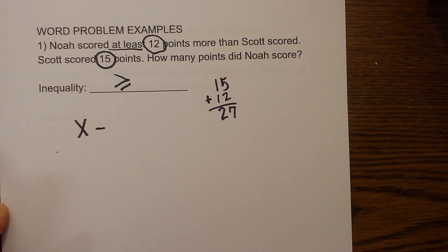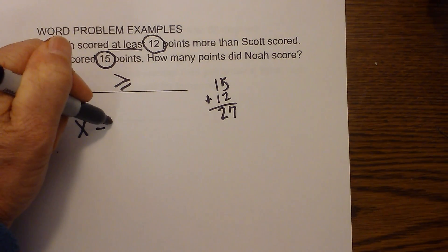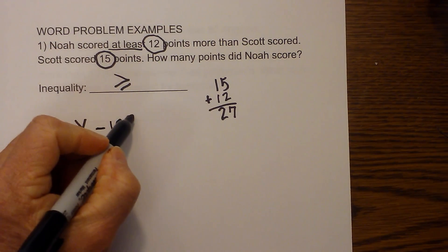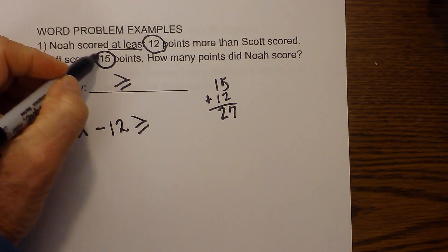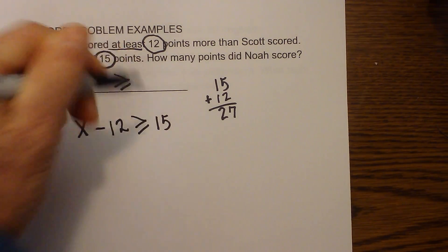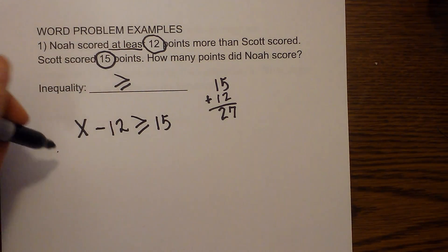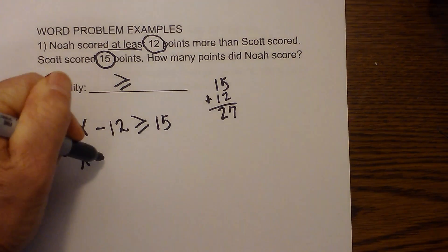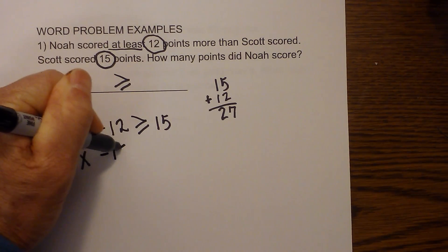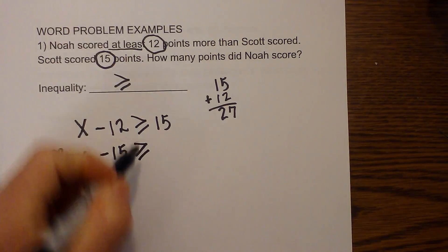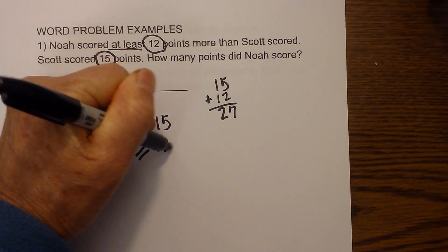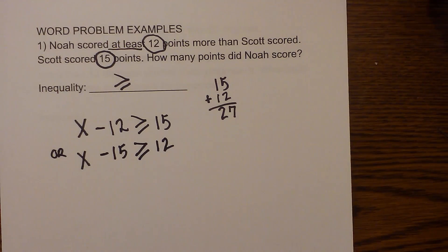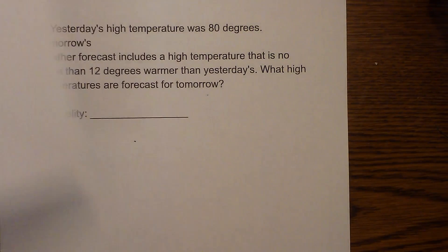Then we write the numbers — I'll write 12 first, plus the inequality sign we came up with, and then the other number. So one solution would be x minus 12 greater than or equal to 15, or we could write it the other way. Either one of those works — those are your solutions. Let's work one more.